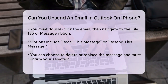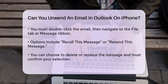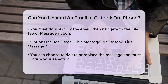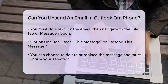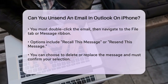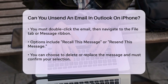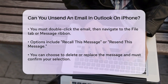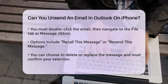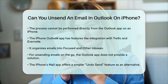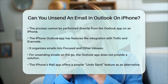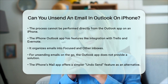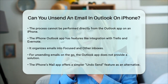Since this process can't be done directly from the Outlook app on your iPhone, it's not a solution for immediate recall on the go. The Outlook app for iPhone does offer some useful features, such as integrating with other apps like Trello and Evernote, and it divides your emails into focused and other inboxes. But when it comes to unsending an email, you're out of luck unless you can quickly switch to a desktop version of Outlook and meet the specific criteria.